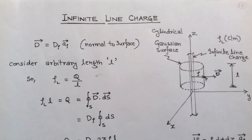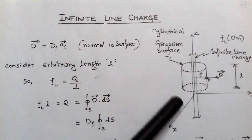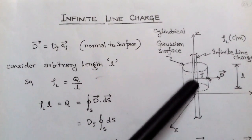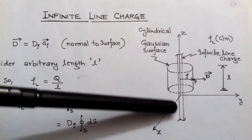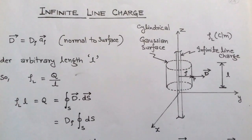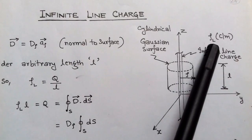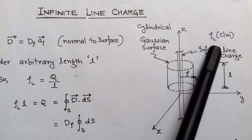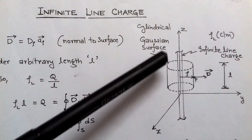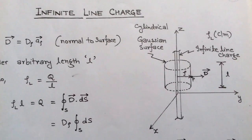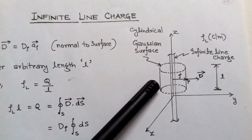The topic is infinite line charge. We consider an infinite line situated on the z-axis. Since this is an infinite line charge, it has infinite length and a line charge density ρl with units of coulombs per meter. This line charge is cylindrical in shape, so we assume a Gaussian surface that is also cylindrical in shape.